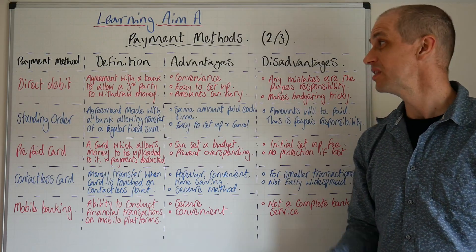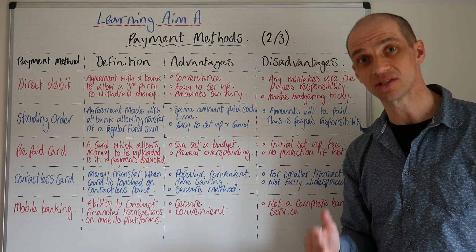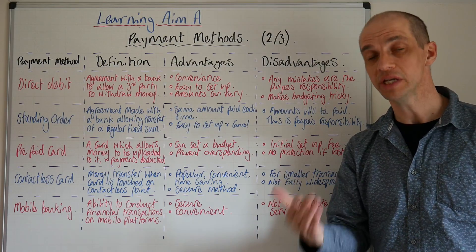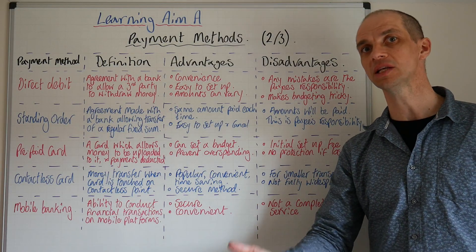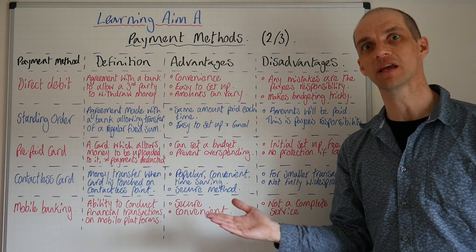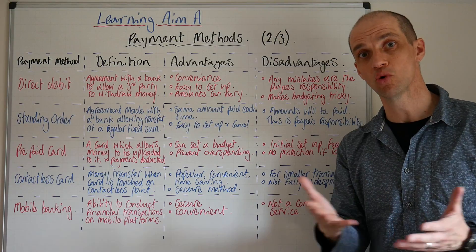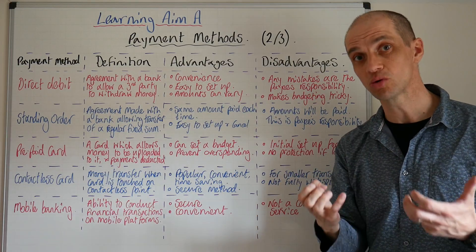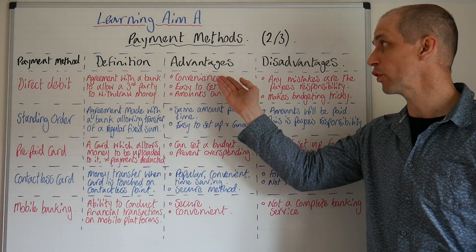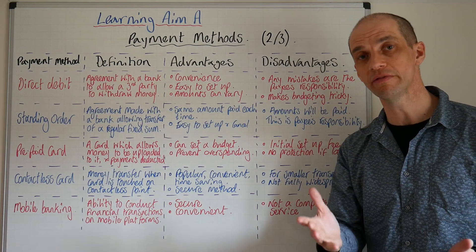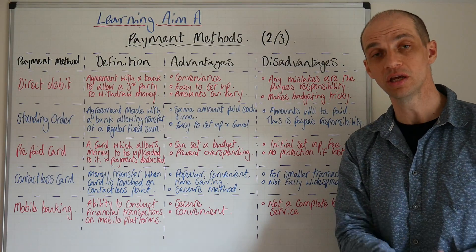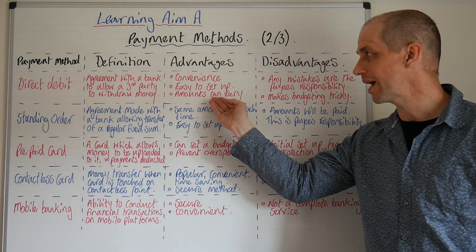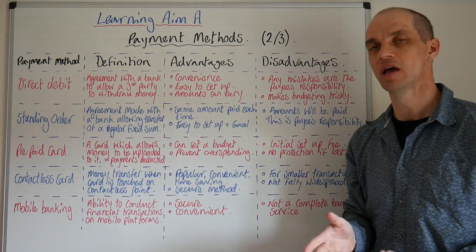When it comes to a direct debit payment, this is an agreement with a bank to allow a third party to withdraw funds from your own bank account. This is where you are giving permission to mobile phone companies, gas companies, electricity companies, broadband companies, and possibly your mortgage or loan company to withdraw money from your bank account. This can be very convenient, it can ensure that you don't forget to make payments, which helps maintain your credit rating, and it's also very easy to set up.